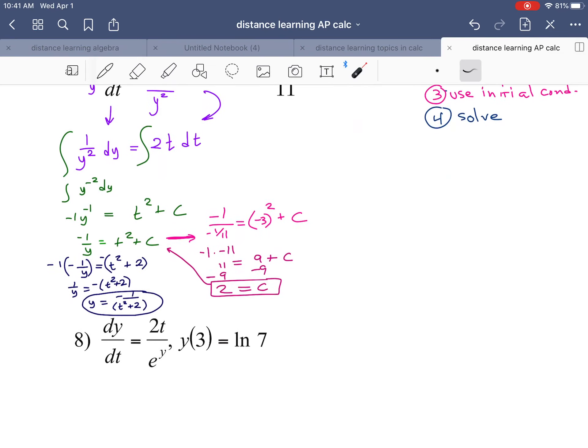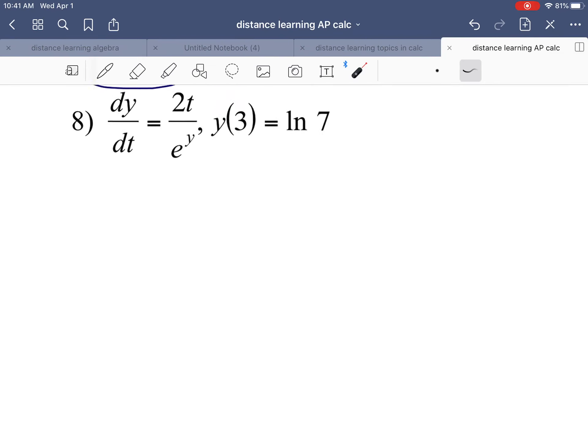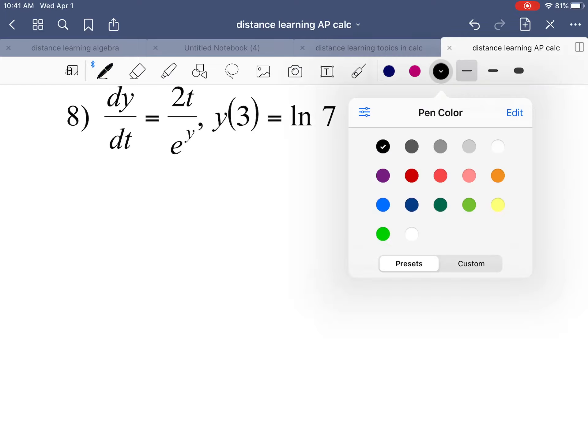So let's check this out for a different equation. I'm going to try to use the same colors here. So separation of variables: I'm actually going to rewrite the equation dy over dt equals 2t over e to the y.